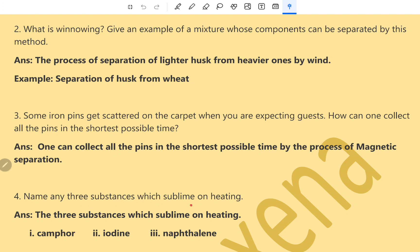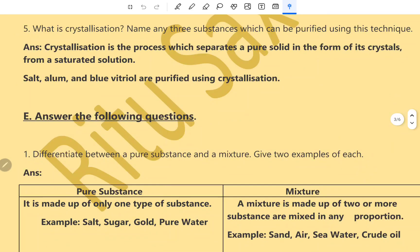Question number 4. Name any three substances which sublime on heating. The three substances which sublime on heating are camphor, iodine and naphthalene. What is crystallization? Name any three substances which can be purified using this technique. Crystallization is the process by which we separate a pure solid in the form of its crystal from a saturated solution. For example, salt, alum, blue vitriol are purified using crystallization.